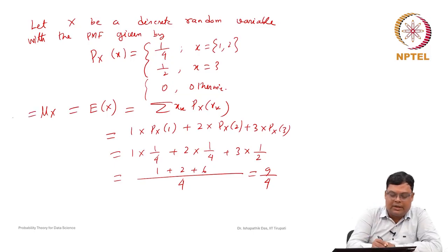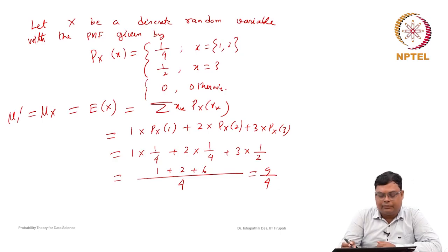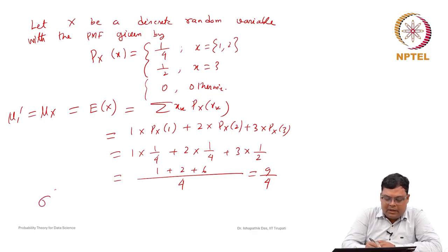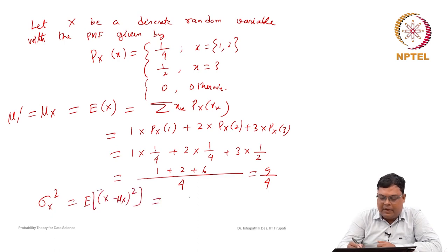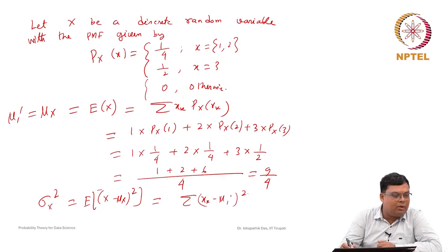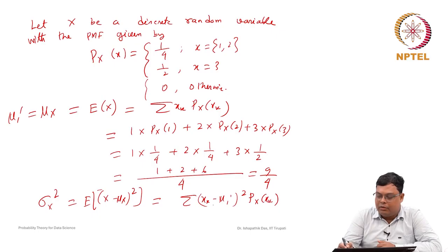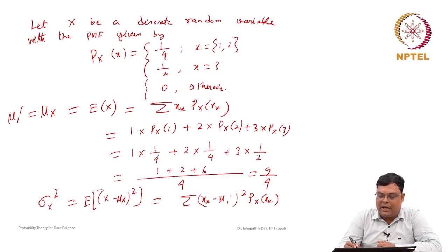Now for the variance σ²ₓ = E[(X − μₓ)²] = Σ (xₖ − μ₁')² · P(xₖ). We could compute this directly by subtracting 9/4 from each value, squaring, and multiplying by the probability — but this is more complicated, so we will instead use the alternative formula involving the second-order raw moment.